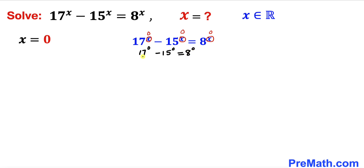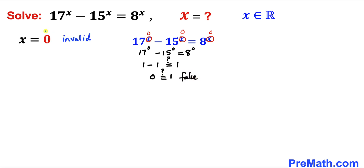We know 17 to the power 0 is 1, minus 15 to the power 0 is also 1, equals 8 to the power 0 which is 1. The left hand side is 0 and the right hand side is 1 — that is a false statement. So x equal to 0 is an invalid solution.